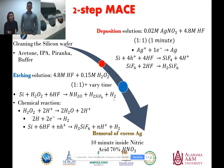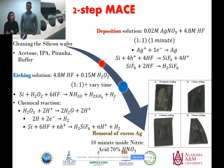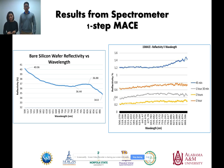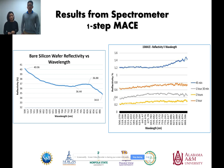On the top left corner, you can see the clean silicon wafers, and on the bottom we can see our results after etching for 45 minutes, one hour, one hour and 30 minutes, and two hours. From the spectrometer results for one-step MACE, the bare silicon wafer shows an average reflectivity of 36.44%. With one-step MACE, the blue line at 45 minutes gives 1.2% reflectivity, the orange line at one hour gives 0.6%, the gray line at one hour 30 minutes gives 0.4%, and the yellow line at two hours gives 0.2%. As etching time increases, reflectivity decreases.